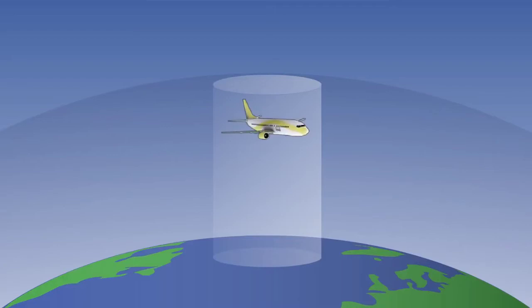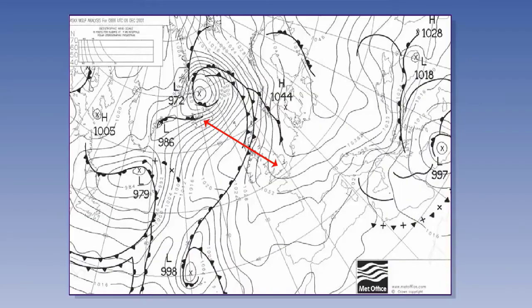By measuring pressure, the altimeter measures height, or altitude. Unfortunately, the relationship between pressure and altitude is not linear. Additionally, high and low pressure weather systems can produce significant air pressure changes for any given altitude.